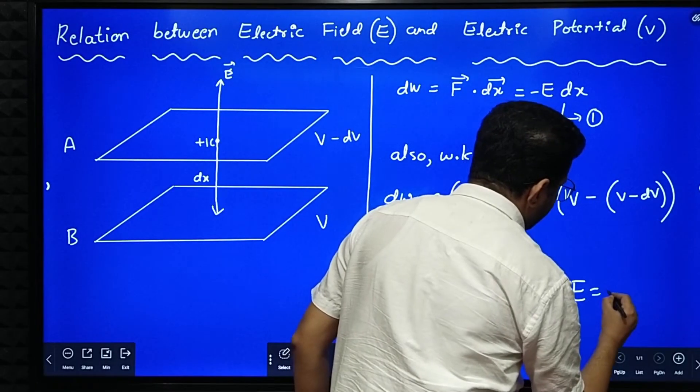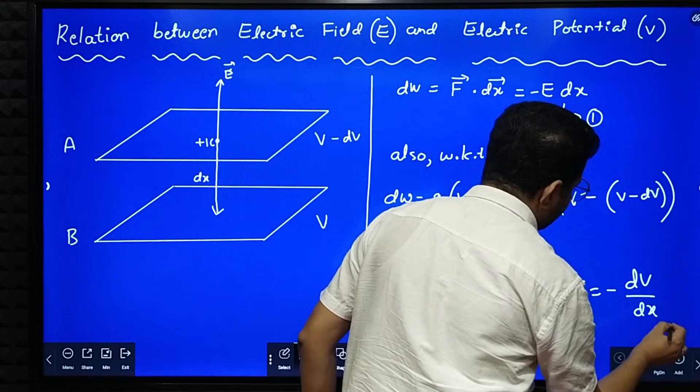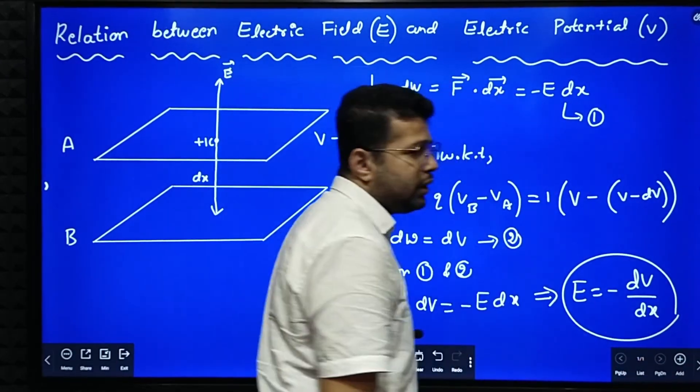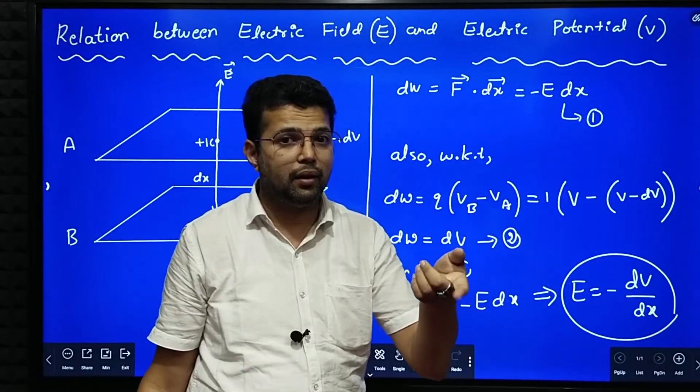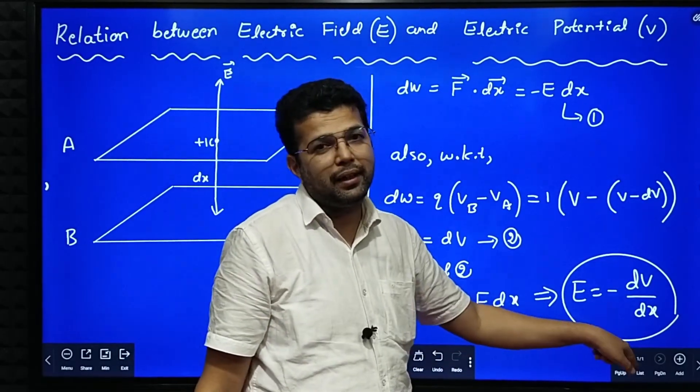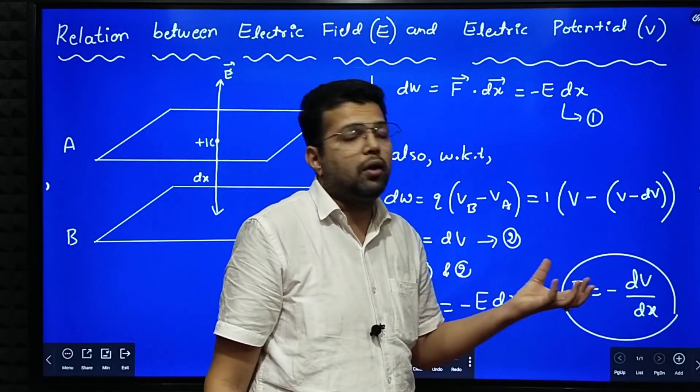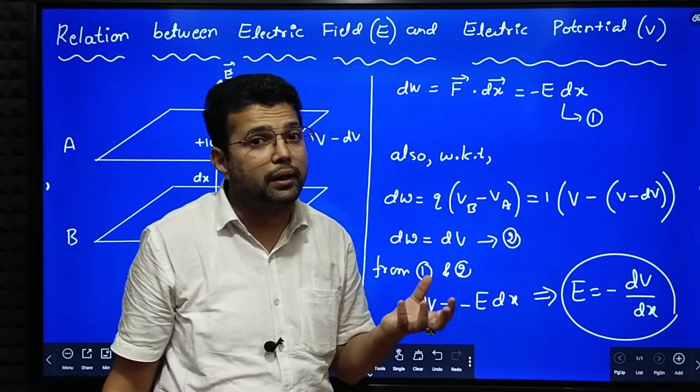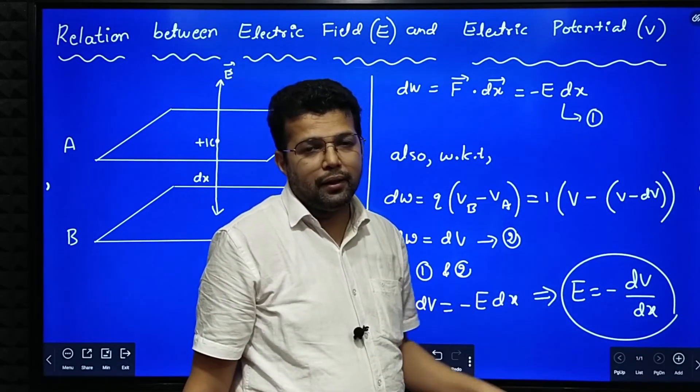Any physical quantity with respect to distance, we call it as gradient, like velocity gradient. This is potential gradient. Variation of potential with respect to distance. We call this term dV by dx as potential gradient. Or I call it as negative potential gradient.